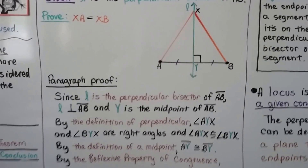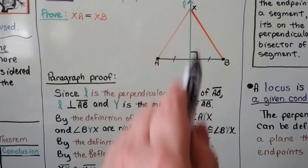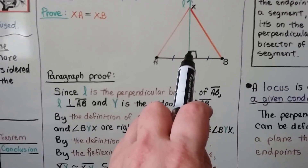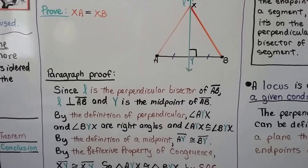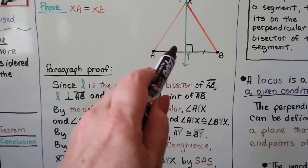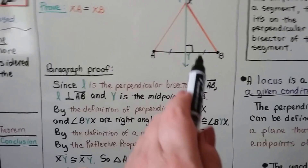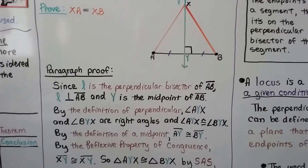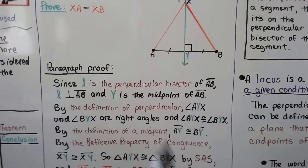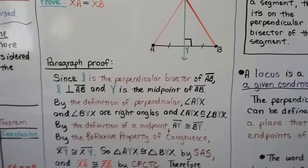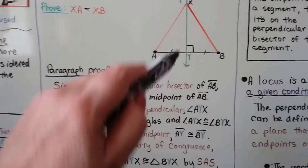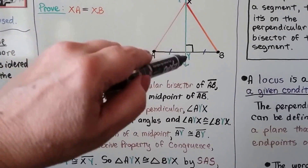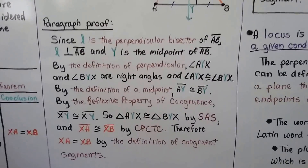We have a paragraph proof. Since L is the perpendicular bisector of AB, then L is perpendicular to segment AB and Y is the midpoint of segment AB. By the definition of a midpoint, segment AY is congruent to segment BY. And by the reflexive property of congruence, segment XY is congruent to segment XY — that's the reflexive property of congruence.